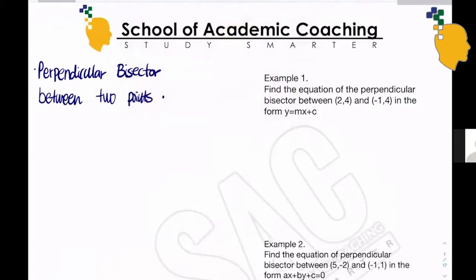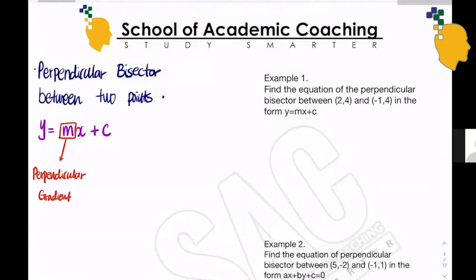Hi guys, Saktur here. Today we're going to show you how to find a perpendicular bisector line. Let's find an equation of a perpendicular bisector between two points. It will be a linear line with the form y equals mx plus c. We're going to find the gradient perpendicular to the line connecting the two given points, then find the c value by substituting the midpoint between those two points.